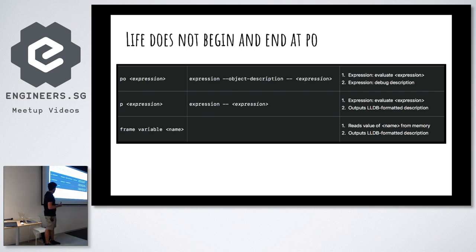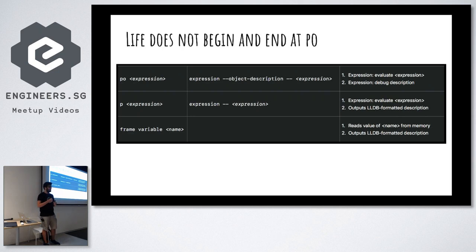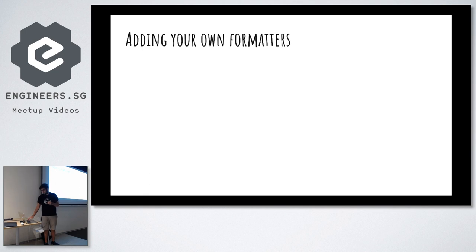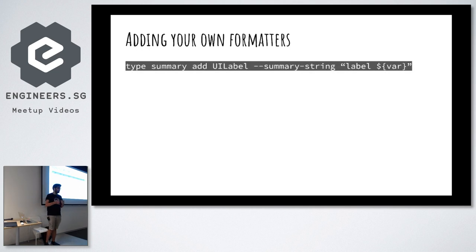There's also `frame variable` — you pass it a variable name, and it will not evaluate an expression but instead read the value from memory and output the LLDB formatter description. The cool thing is the default implementation shows you all the instance variables of any object, so you can look at how internal objects implement certain things. And you can add your own formatters too — you can define your own formatter for any particular type, so you don't need to edit the source code.